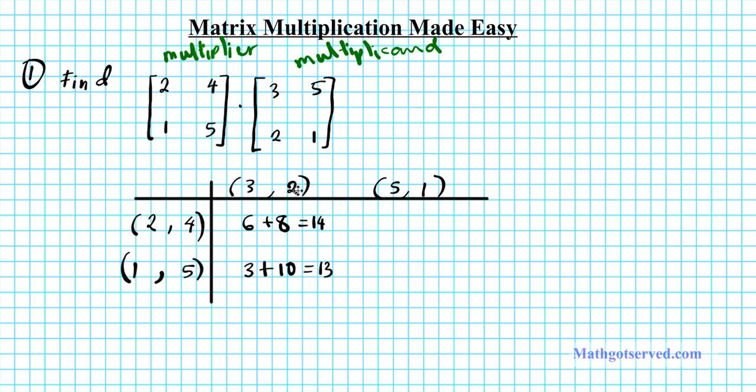Next one, 2 times 5 is 10, plus the y is 4 times 1, 4, add it up, 14. And then the next one, we have 1 times 5, 5, plus 5 times 1, 5, add it together, you get 10. So your final matrix, the product of those two matrices is 14, 14, 13, and 10. So there you have it.